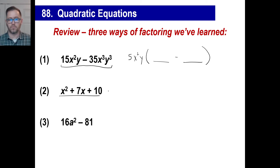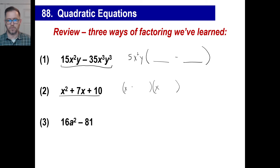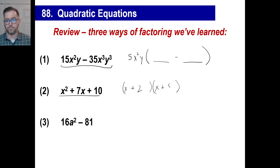This one here — trinomials — we can break up into two binomials. And these are always x's. This is going to be pluses. And the question is, what two numbers multiply to give you 10 and they also add to give you 7? And of course the answer is 2 and 5.